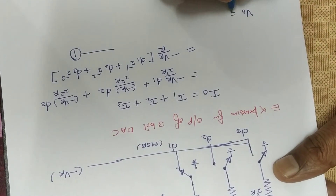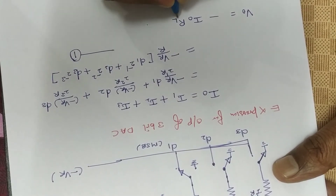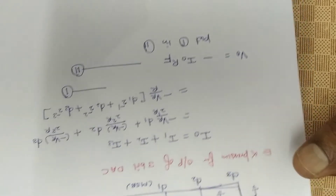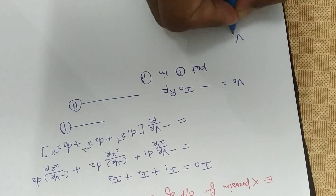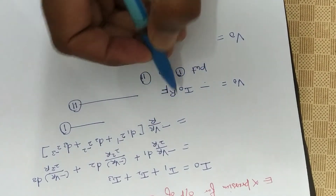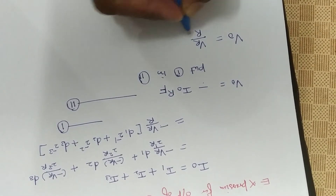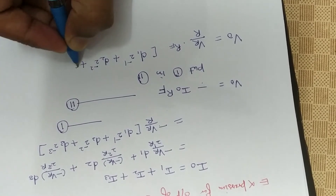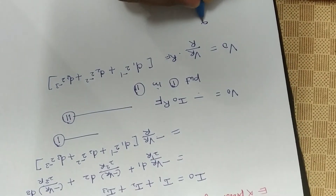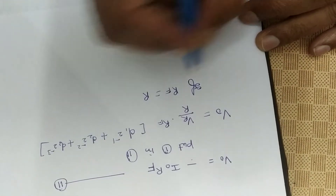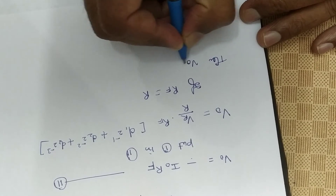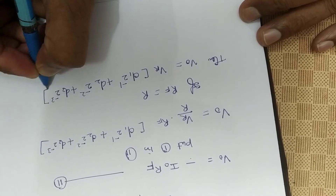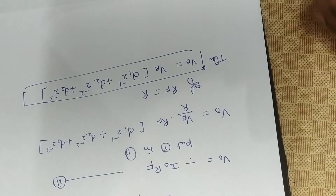The output of the operational amplifier is equal to minus I_not times Rf (feedback resistance). So V_out = -(VR/R) × Rf × [d1 × 2^(-1) + d2 × 2^(-2) + d3 × 2^(-3)]. If Rf equals R, then V_output = VR × [d1 × 2^(-1) + d2 × 2^(-2) + d3 × 2^(-3)]. This is the expression for the output of the 3-bit digital-to-analog converter.